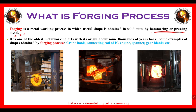Useful shapes can be obtained by pressing or hammering the metals. There are three kinds of forging process in which useful shapes are obtained: hot, cold, and warm.